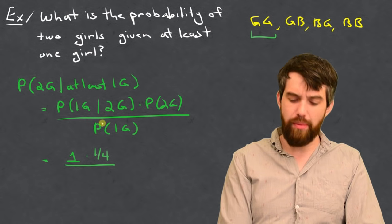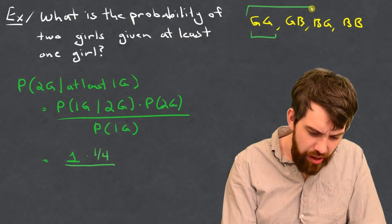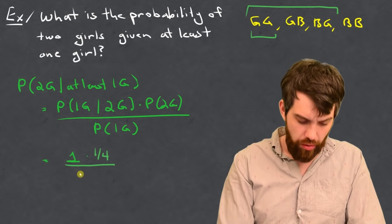And then, I need to divide out by the probability of at least one girl. Well, this one has a girl in it, that one has a girl in it, that one. There's three of them that have a girl, so three-quarters.